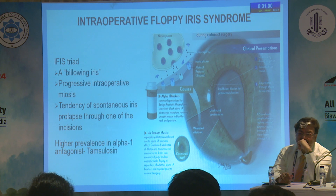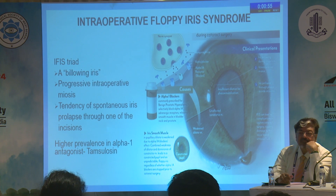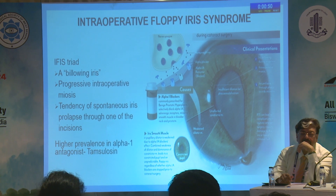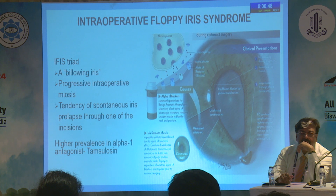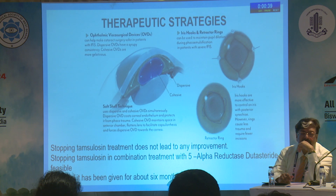The IFIS triad was described by Dr. Chang and colleagues in 2007, which includes billowing iris, progressive intraoperative miosis, and the tendency for spontaneous iris prolapse through one of the incisions. It is highly prevalent with alpha-1 antagonists, particularly Tamsulosin. Therapeutic strategies include OVDs, iris hooks, retractor rings, and the soft shell technique.